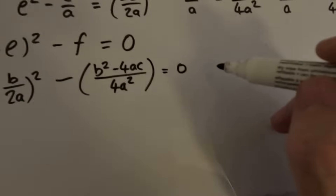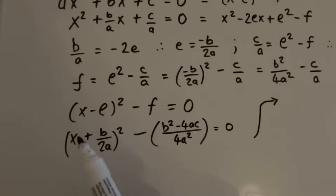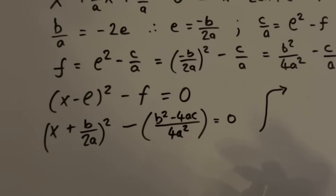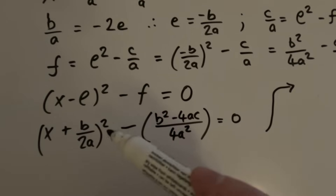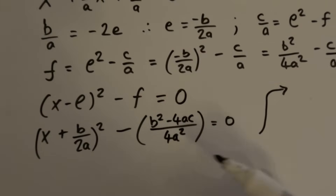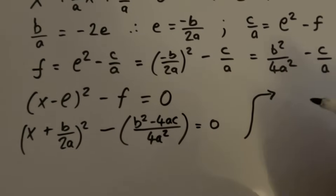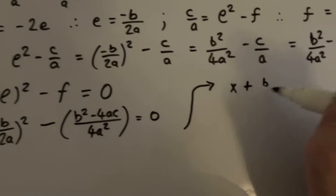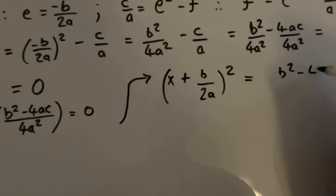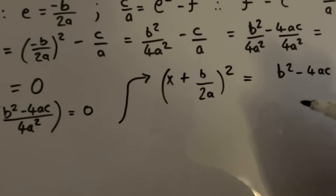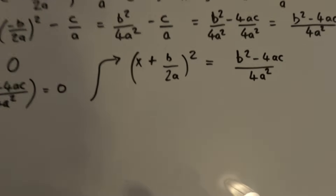Now we take the (b² − 4ac)/4a² term over to the right-hand side, because we have our (x + b/2a)² and then minus f. Taking f to the right-hand side gives us: (x + b/2a)² = (b² − 4ac) / 4a².